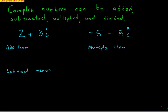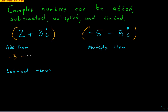Complex numbers are numbers, so we can add, subtract, multiply, and divide them. To add (2 + 3i) + (−5 − 8i): add the real parts — 2 + (−5) = −3 — and add the imaginary parts — 3i + (−8i) = −5i — giving −3 − 5i.